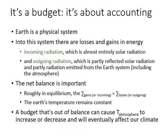The output could be reflected solar radiation, or radiation emitted from the Earth's system and atmosphere, and it's the net balance that is important. It's roughly in equilibrium, meaning the sum of all incoming radiation equals the sum of all outgoing radiation. If that's the case, the Earth's temperature remains constant. However, a budget that is out of balance can cause the temperature of the atmosphere to increase or decrease and will eventually affect our climate. If the Earth receives more solar energy than it sends back to space, we expect the Earth to warm; if it sends more than it receives, we expect it to cool.